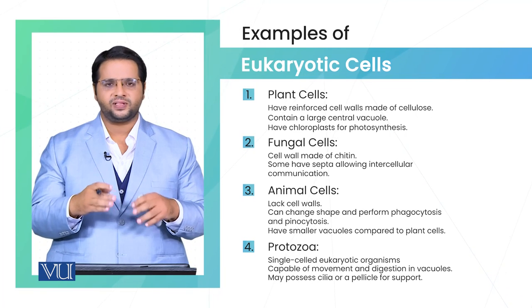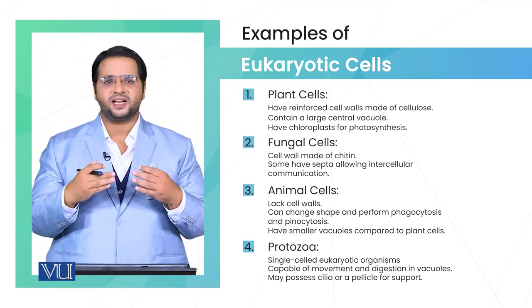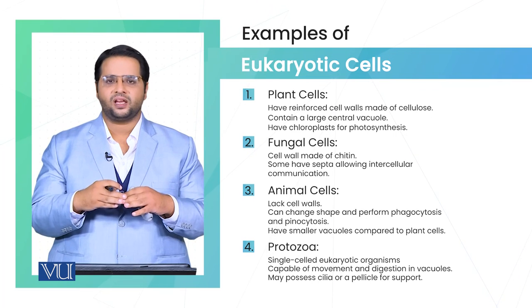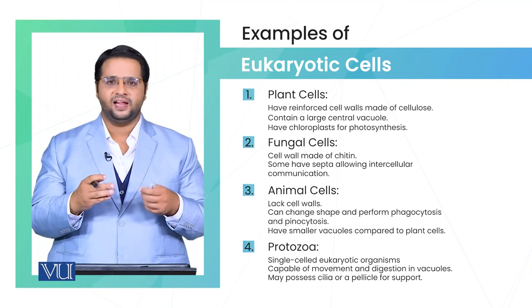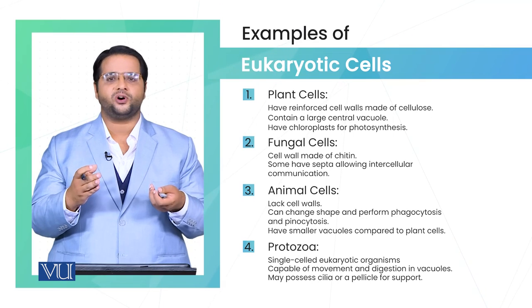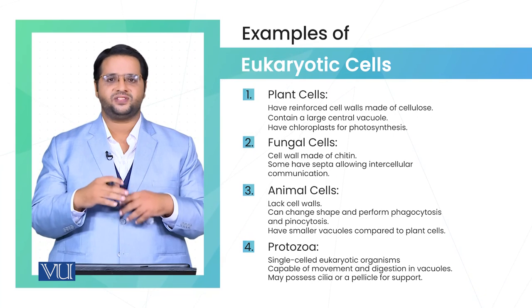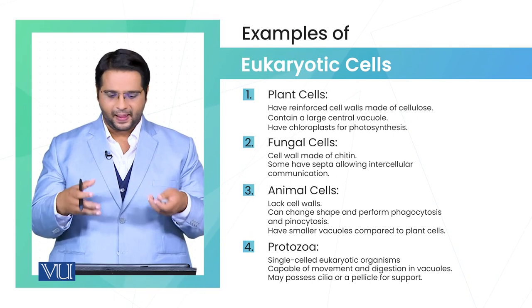As compared to the other eukaryotic cells mentioned earlier, which are multicellular, protozoans are unicellular. The movement is also supported by the presence of cilia, and their structures are supported by the pellicle.